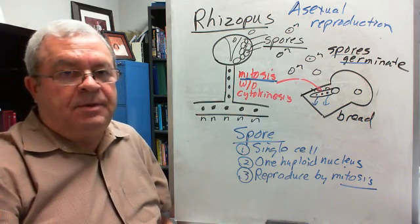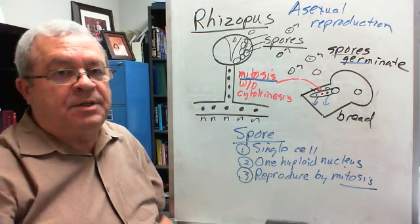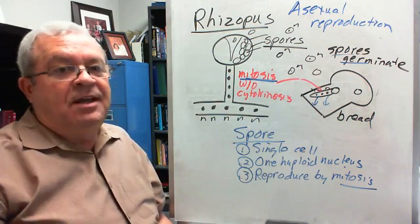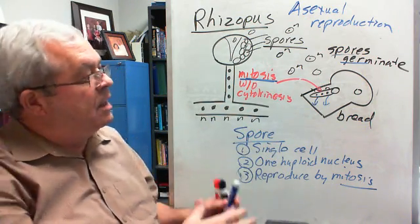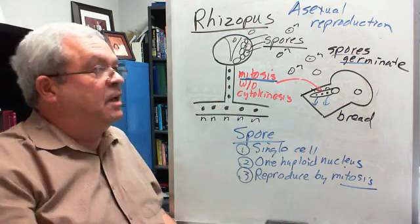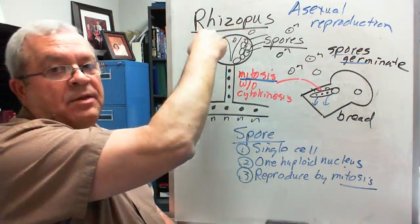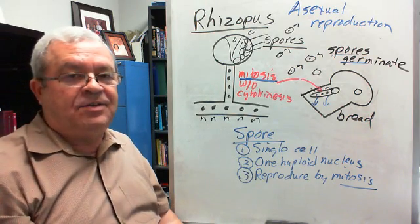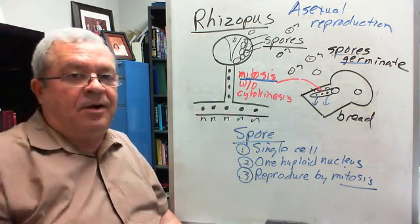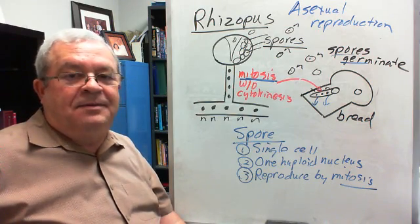Now, does rhizopus have sexual reproduction? Yes, rhizopus does. We're not going to cover it in this class, but yes, rhizopus has sexual reproduction as well. But not in this situation. These little round things, these spore producing structures, they function in asexual reproduction as we see here. Alright, that's it.